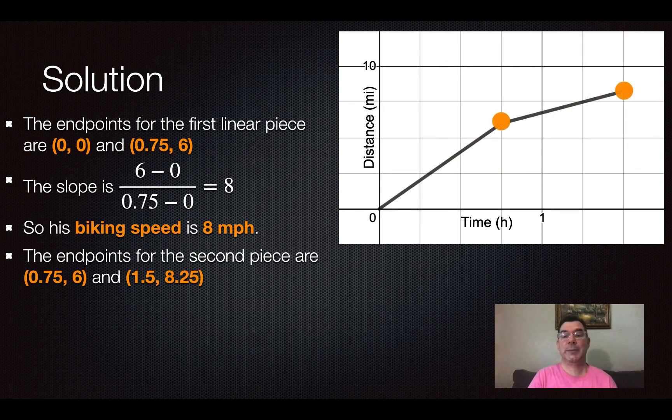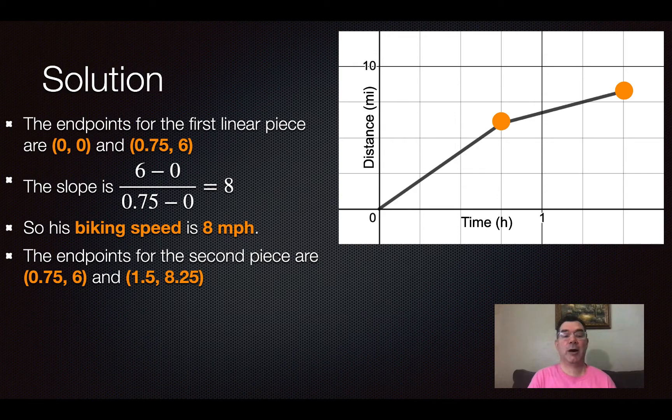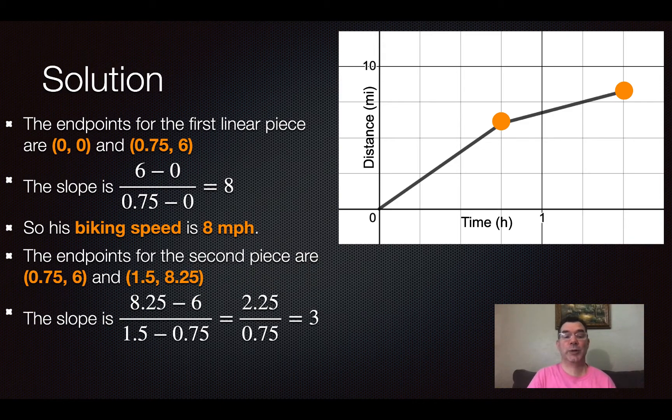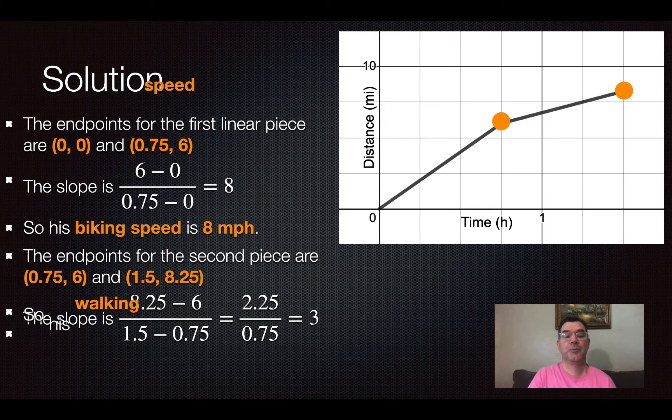Now for the walking piece which has a lesser slope, the endpoints there are (0.75, 6) and (1.5, 8.25). The slope between those is going to be 2.25 over 0.75 and that is 3. So that means his walking speed is 3 miles per hour.